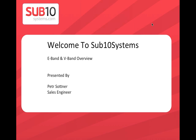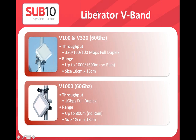V-band is part of the millimeter wave or microwave spectrum, related to 60 gigahertz. We have three products in V-band: V100, V320, and V1000. As you'd expect, the number behind V is related to the maximum user throughput you can have on the link.